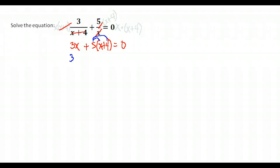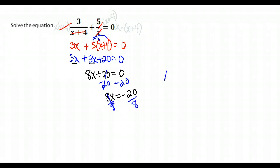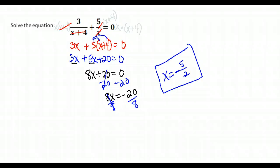Distribute to eliminate parentheses: 3X plus 5X plus 20. Combine like terms: 8X plus 20 equals 0. Subtract 20 from both sides to get 8X equals negative 20. Divide both sides by 8: X equals negative 20 over 8, which reduces — 4 goes into 20 five times and into 8 twice — giving a final answer of negative 5 halves, or negative 2.5.